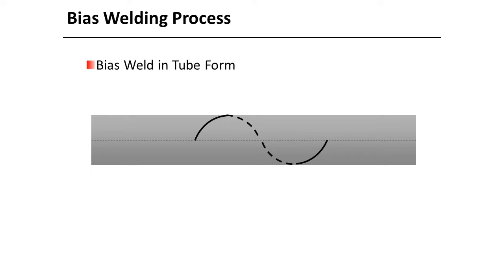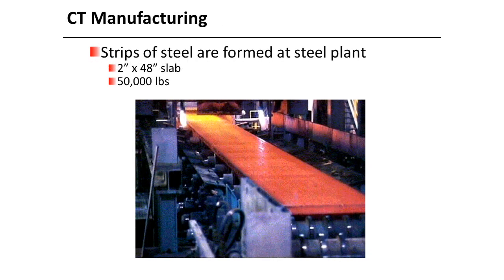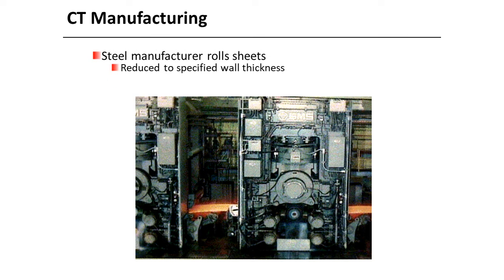Once formed into a tube, the weld forms a helix, so during bending only one portion of the weld is exposed to bending stresses. Distributed weld reduces local material changes with no reduction in fatigue life. The pipe then goes through the roller mill. The continuous casting process uses 2-inch by 48-inch slabs, approximately 50,000 pounds from the same heat. Rollers reduce the pipe to the specified wall thickness.